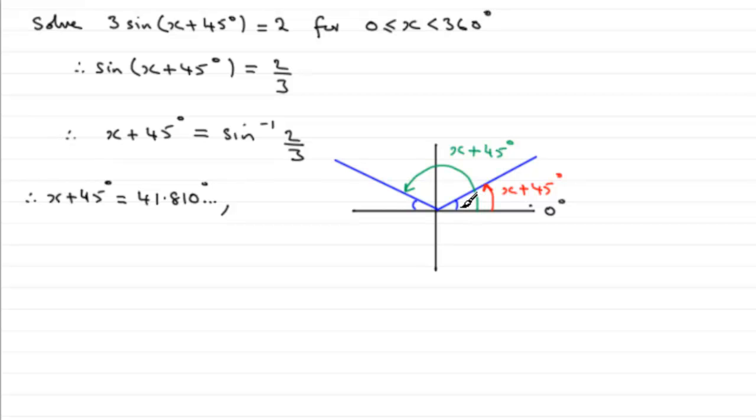So this angle in here, this blue angle as you see here, is a possible 41.810 degrees. That means that this one over here is also 41.810 degrees.